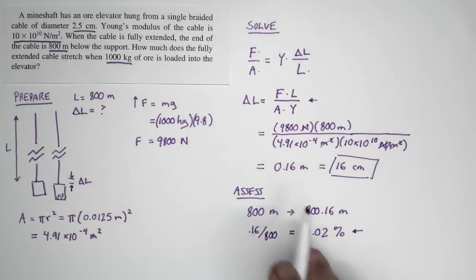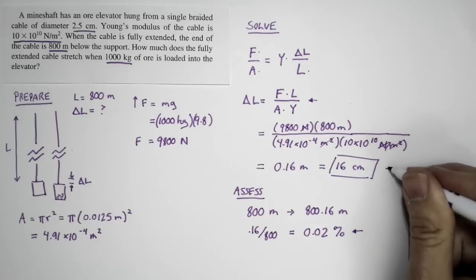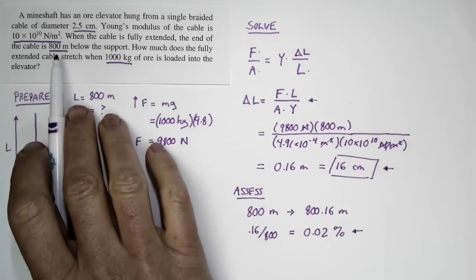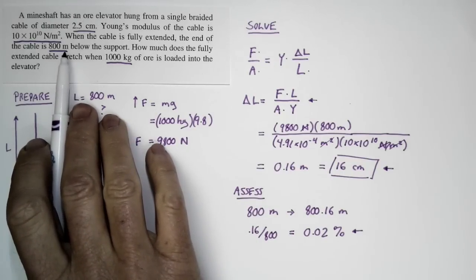If it stretched a significant amount compared to its length, you're getting up towards the point where the cable might be breaking, and we don't want that. So this number, it seems large, but it just seems large because the cable is long—the cable is 800 meters long. That's nearly a kilometer of cable. So the stretch seems big, but identifying it as a fractional length, not so much.